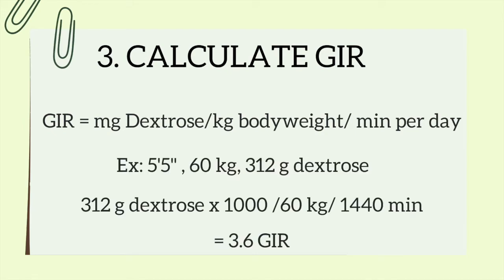For our patient — let's say they're 5'5" and weigh 60 kilograms — to calculate the GIR, I multiply the grams of dextrose by 1,000, then divide by 60 kilograms, then divide by 1,440 minutes. That gives us a GIR of 3.6 milligrams per kilogram per minute. That's under 4, so as long as this person's blood glucose levels weren't elevated or increasing dramatically, it should be okay.